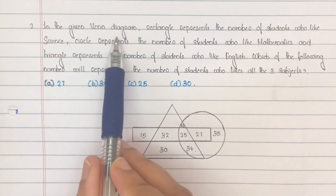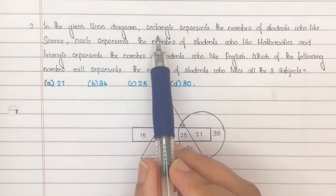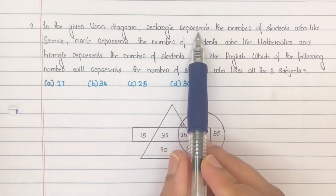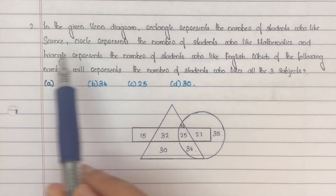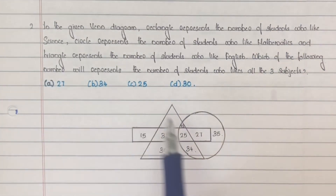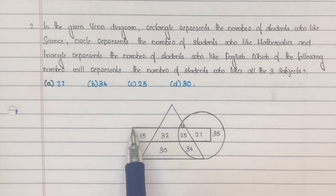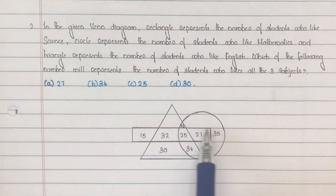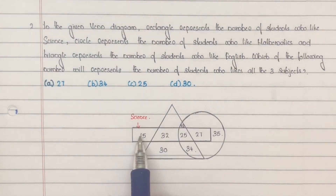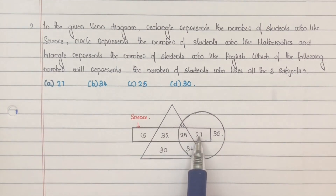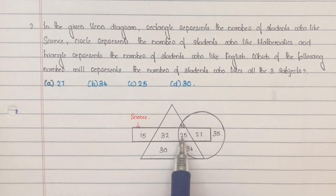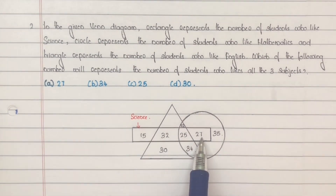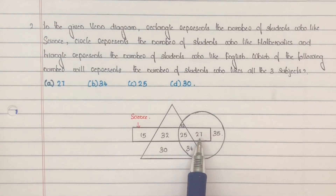In the given Venn diagram, the rectangle represents the number of students who like science. The rectangular portion represents the number of students who like science, i.e., 15 plus 32 plus 25 plus 27 students like science.